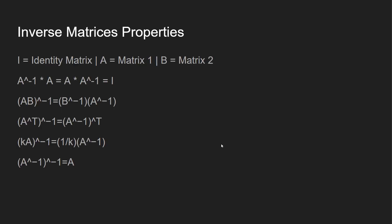Some properties that you should be aware of. I've labeled these: i is the identity matrix, a is matrix one, b is matrix two. A raised to negative one times A is equal to I, which is our identity matrix — very useful when solving equations. Also, AB raised to the negative one is equal to B raised to the negative one times A raised to the negative one. A raised to the T raised to the negative one is equal to A raised to the negative one raised to the T. Then you have kA raised to the negative one equals one divided by k times A raised to the negative one.